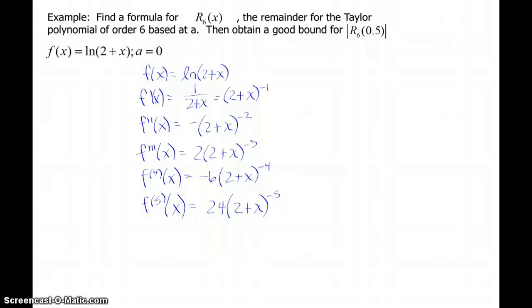Will the first five derivatives give me the polynomial of order 6? No, it won't. I've got to have the 6th derivative as well. Here it's going to give me order 6. That should be negative 120(2+x)^(-6). There's my derivatives. The next thing I do is evaluate all those derivatives and my function at 0.